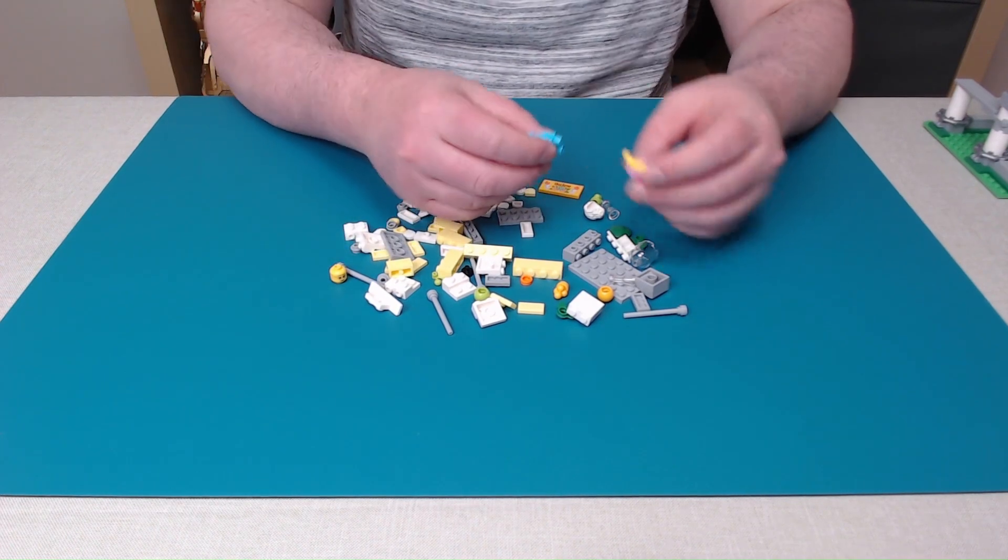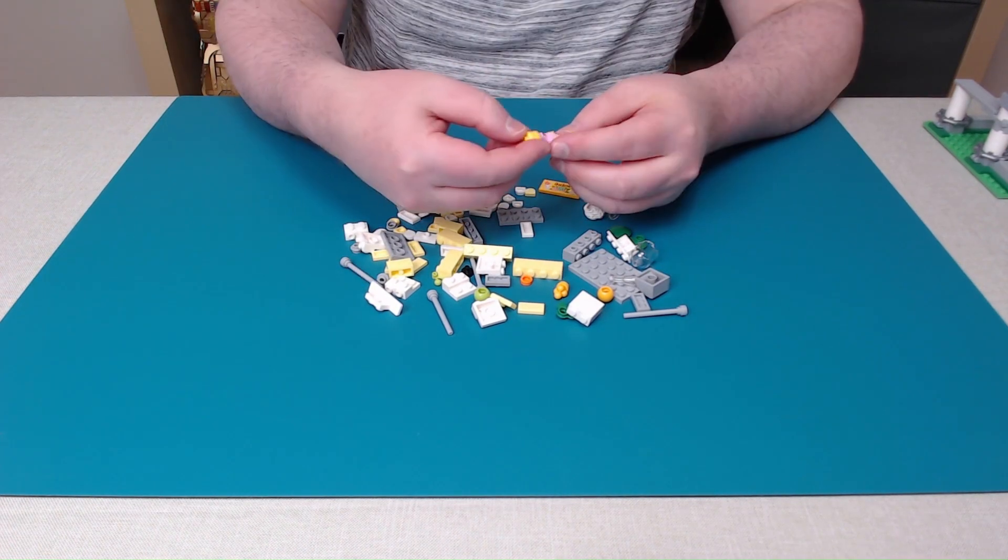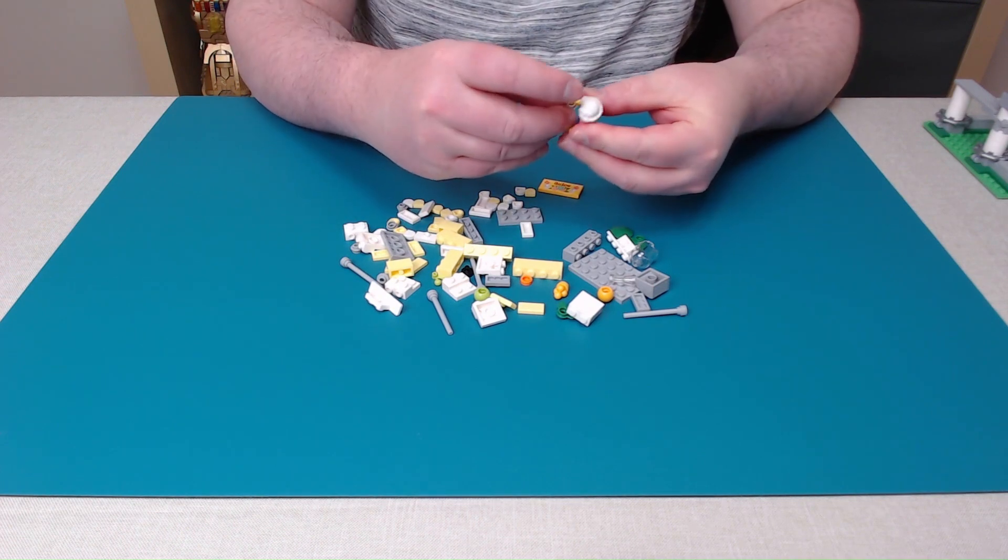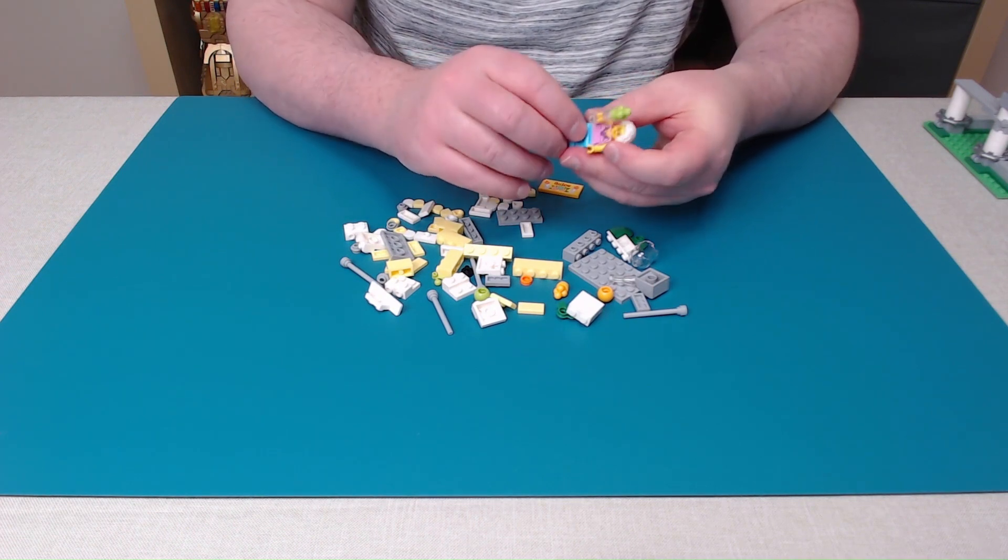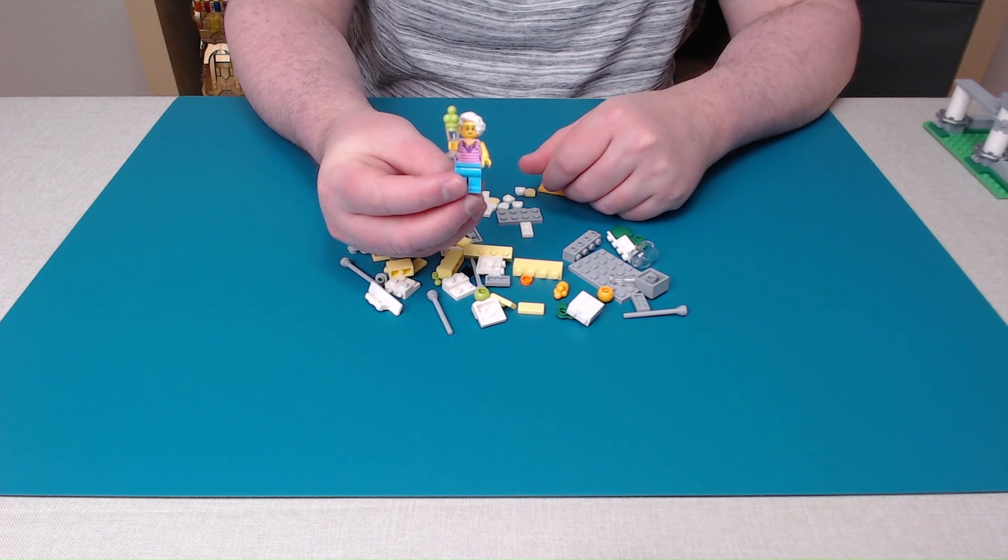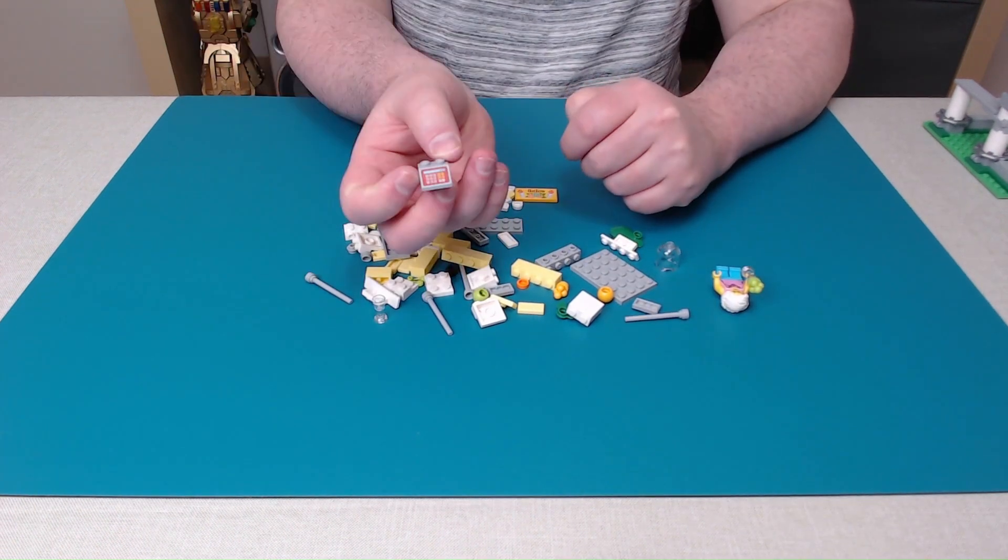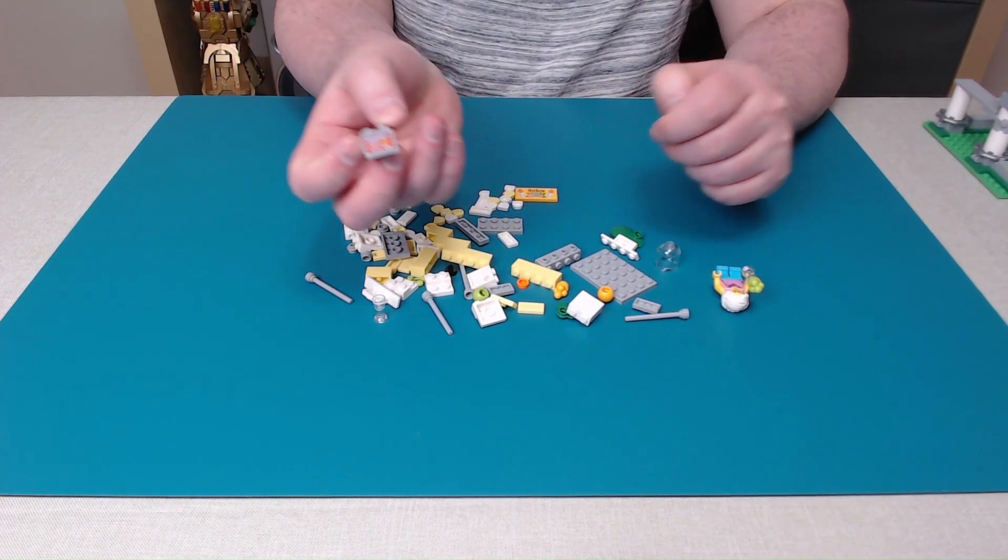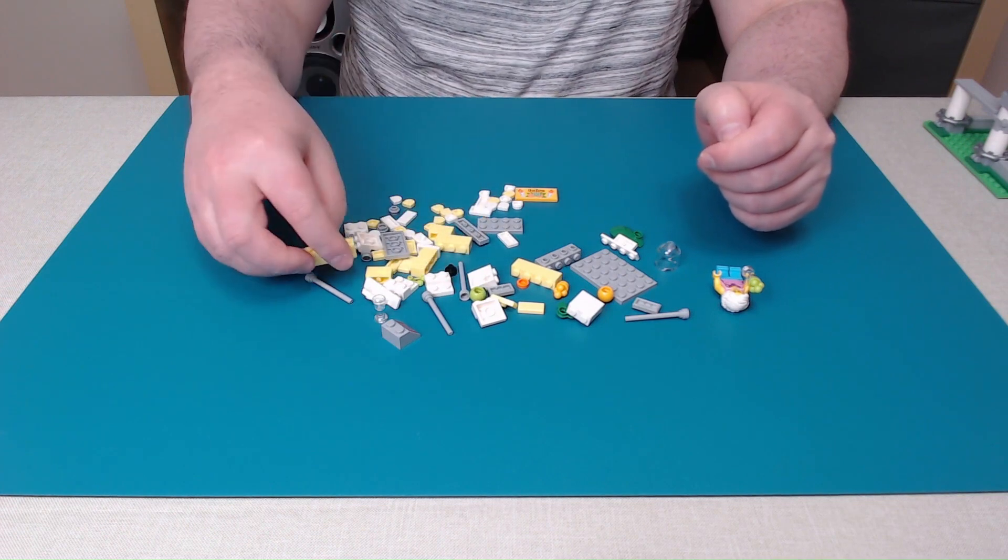I'll do the minifig first because it'll be pretty quick. This must be a smoothie or ice cream or something. Oh, we've got a nice cash register printed brick. Always nice to see the printed bricks.